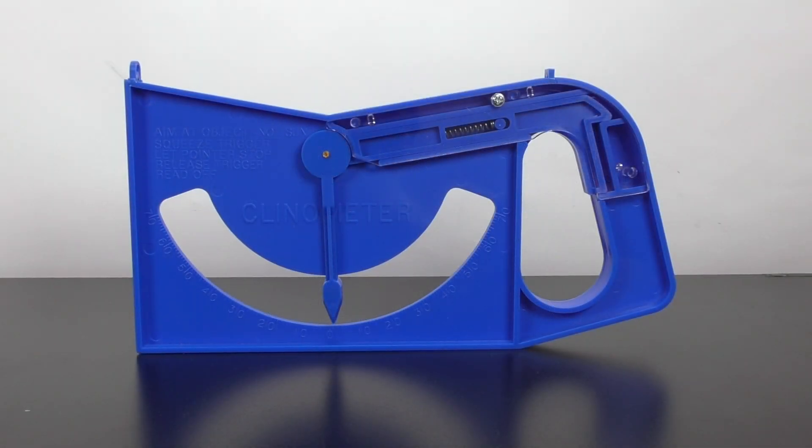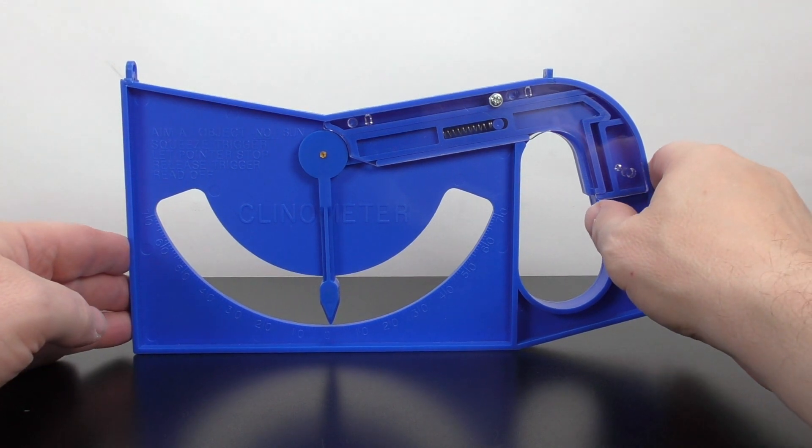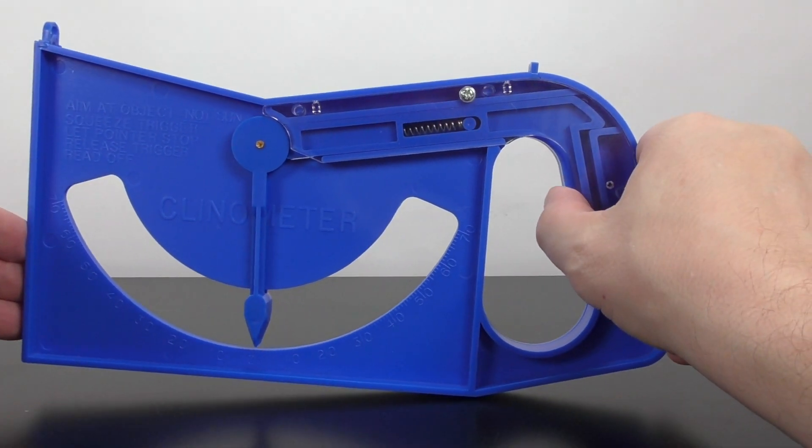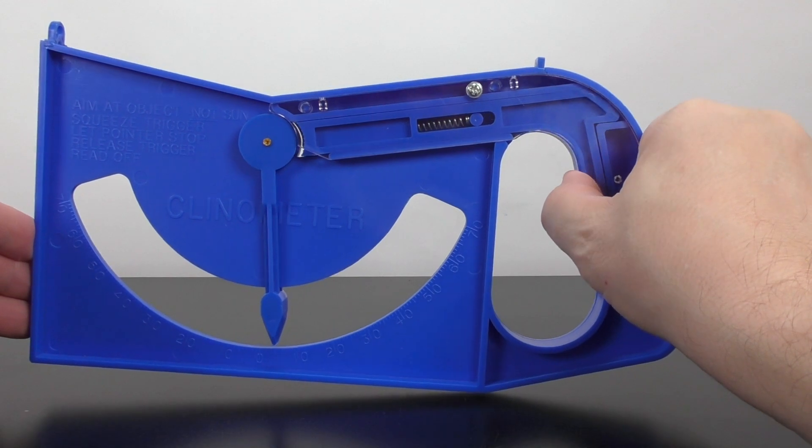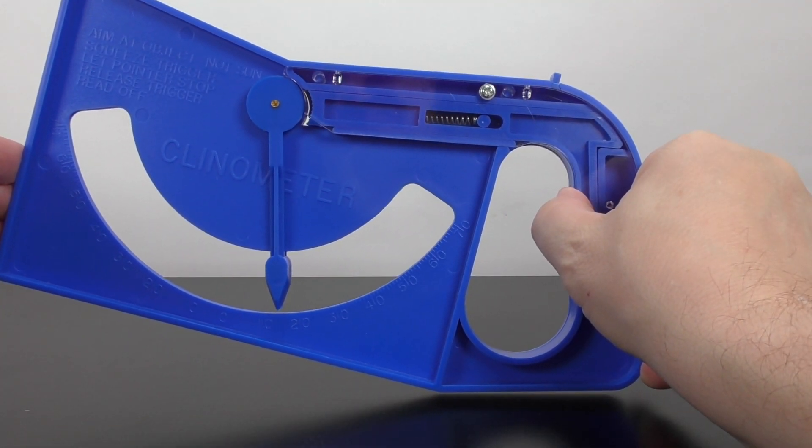The clinometer allows you to measure the angle of inclination or declination. The spring-loaded trigger securely holds a freely pivoting indicator to the desired angle.